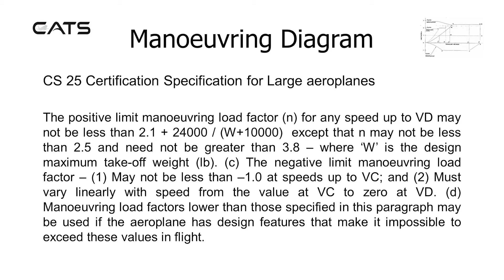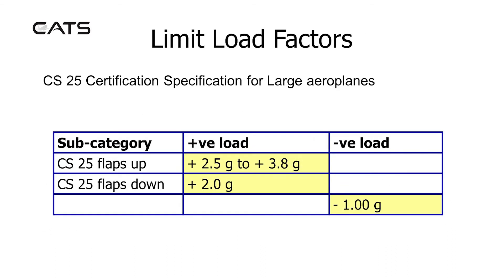The negative limit manoeuvring load factor may not be less than -1 at speeds up to VC (design cruise speed), and must vary linearly with speed from the value at VC to 0 at VD (design dive speed). Manoeuvring load factors lower than those specified may be used if the airplane has design features that make it impossible to exceed these values in flight. For CS25 aircraft, flaps up the positive load factor ranges from +2.5g to +3.8g, flaps down is +2g, and for negative loadings -1g.